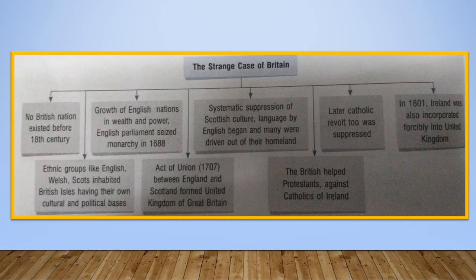We come across the strange case of Britain. No British nation existed before the 18th century. Ethnic groups like English, Welsh, and Scots inhabited the British Isles, having their own cultural and political base. Growth of English nations in wealth and power — the English Parliament seized the monarchy in 1688. The Act of Union 1707 between England and Scotland formed the United Kingdom of Great Britain. Systematic suppression of Scottish culture and language by the English began and many were driven out of their homeland. In 1801, the British helped the Protestants against Catholics of Ireland. The Catholic revolt too was suppressed, and Ireland was also incorporated forcibly into the United Kingdom.